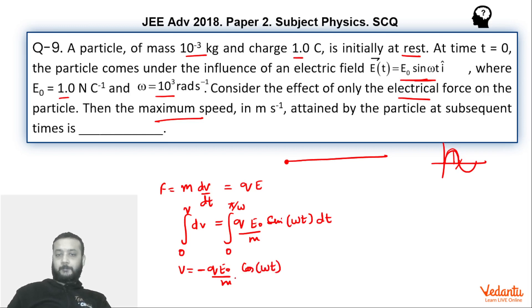And from 0 to pi by omega. Let's substitute the values. So q is 1, E0 is 1, M is 10 to the power minus 3, and omega is 10 to the power 3. So together they will again become 1. Minus sign is here. Cos of pi, which is minus 1, minus cos of 0 is 1. Hence this becomes 2 meter per second. Therefore velocity will become 2 meter per second.